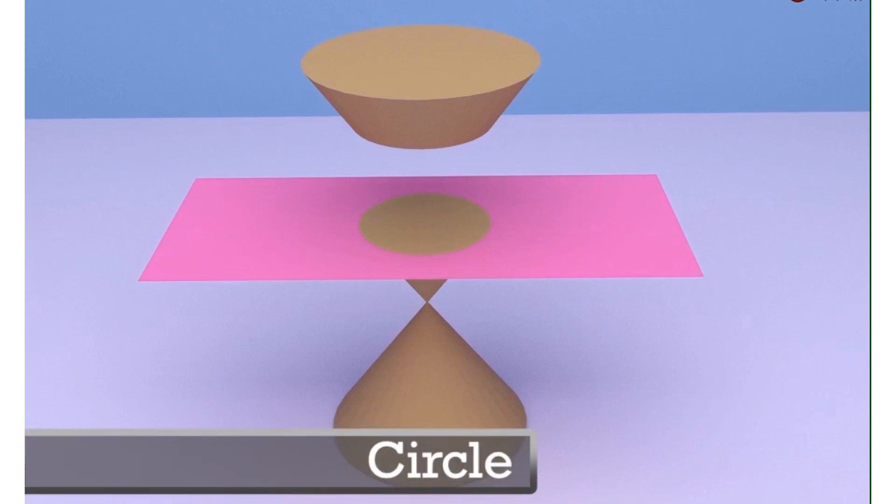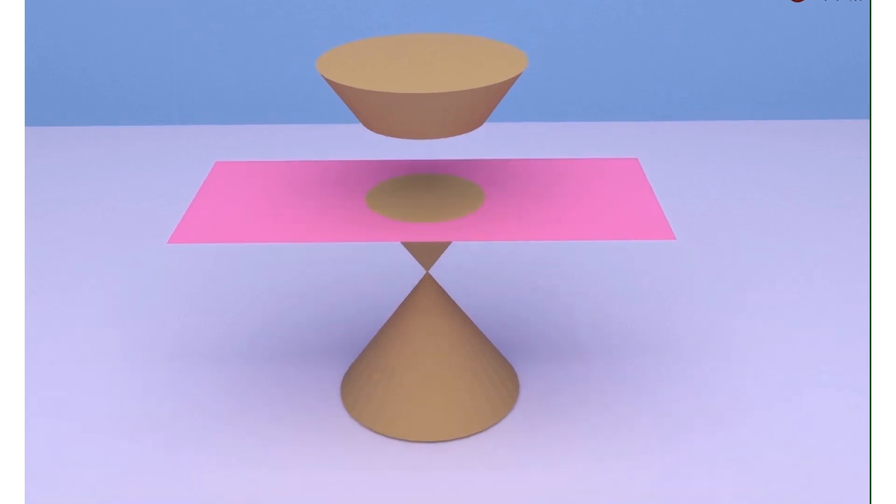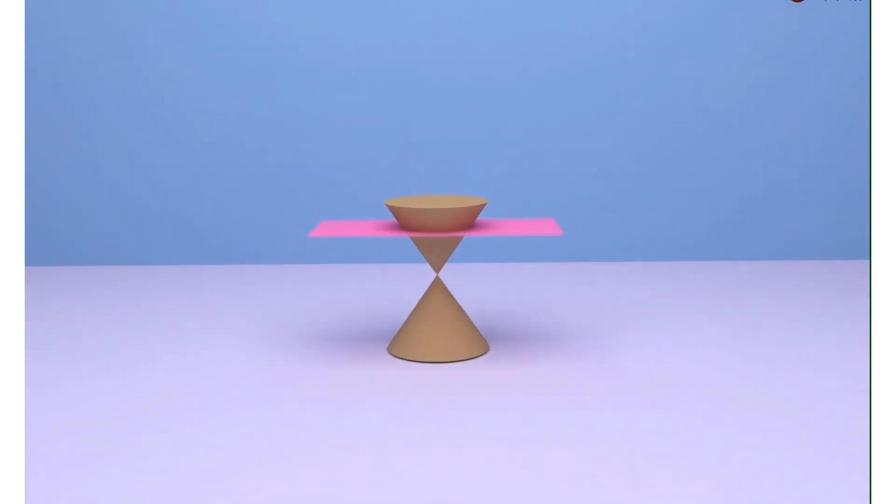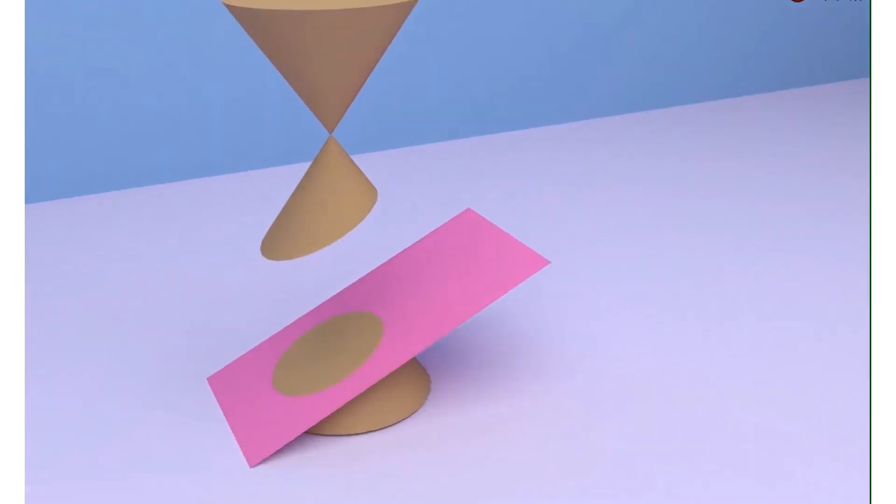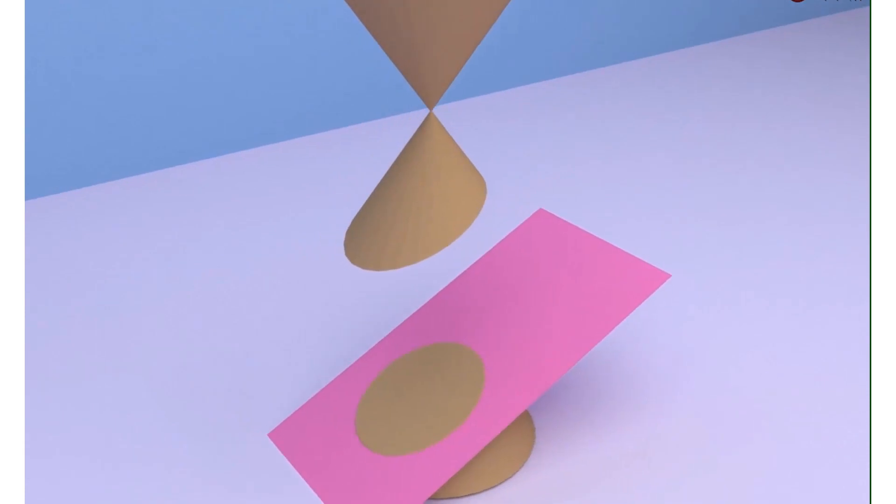Now I have increased the angle of my plane a little. If I cut my cone at this angle, the circle shape does not remain anymore and I'm going to get a squished circle or an ellipse.